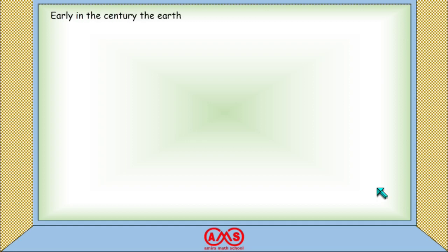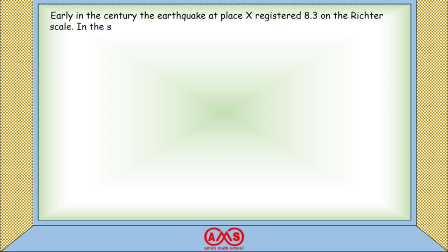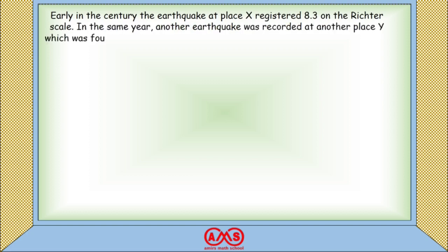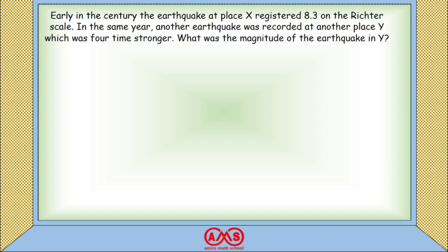Early in the century, the earthquake at place X registered 8.3 on the Richter scale. In the same year, another earthquake was recorded at place Y, which was four times stronger. What was the magnitude of the earthquake in Y?